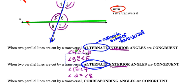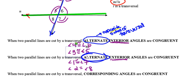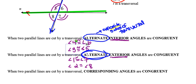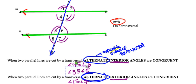The next relationship has to do with corresponding angles. Corresponding angles are the most difficult to explain. What I'm going to do is envision taking line M and sliding it down on top of line N. The corresponding angles would be the ones that end up right on top of each other. So angle two would be on top of angle six, angle one on top of angle five, four and eight would be corresponding, as would three and seven.